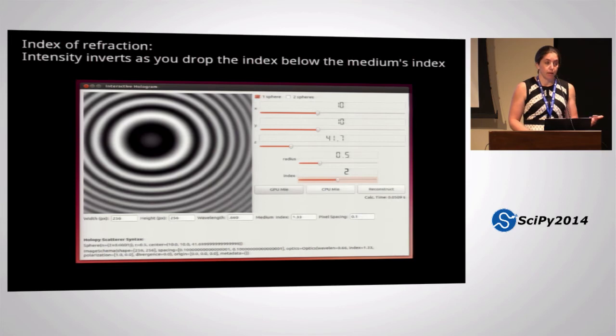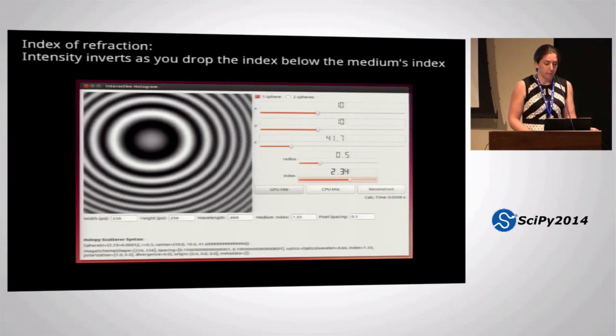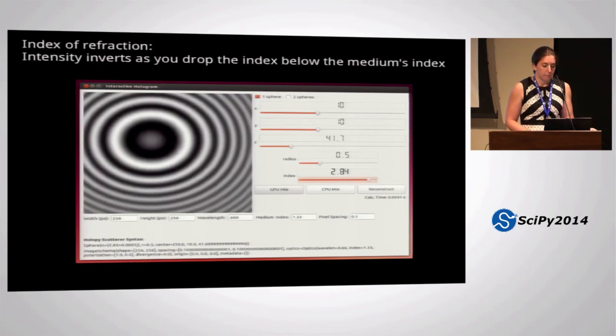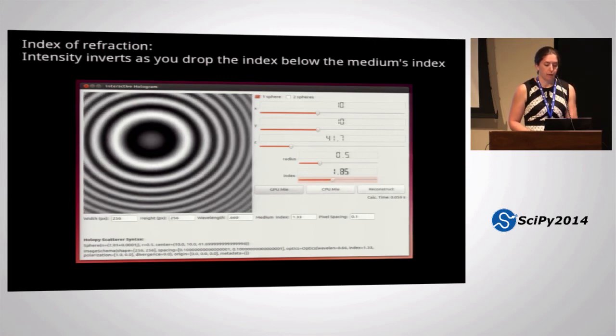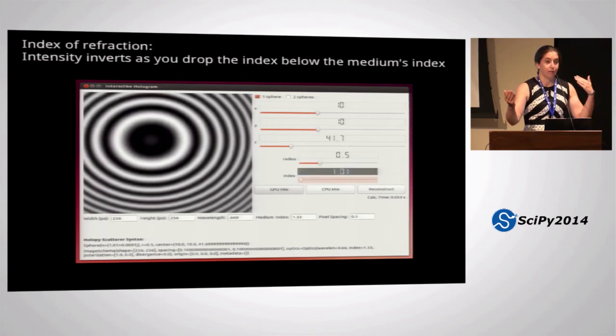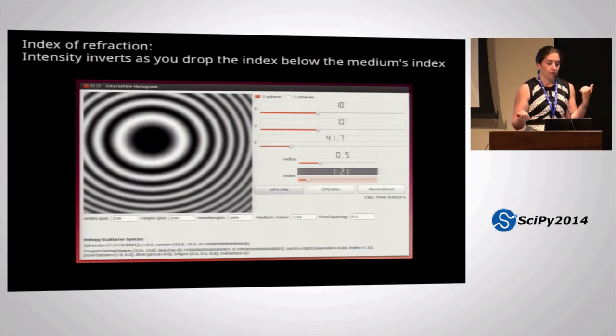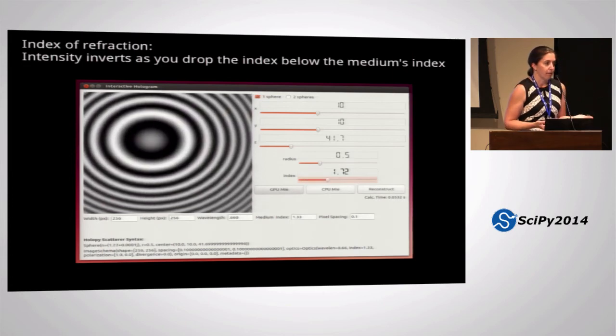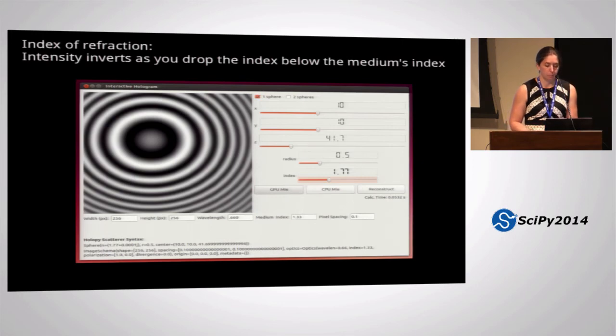Here's something that I didn't know until I played around with it in the GUI. I'm changing the index of the material here, and it's important to think about the index of the material relative to the medium that it's in. Here I have the medium set to 1.33, and as I bring the medium of the particle down through 1.33, you see that it flips. There's this switch in intensity that I didn't know to expect there, and never would have thought to investigate that with the theory. And so that kind of suggests to me some interesting experiments. Right now we work with particles that just have a fixed index all the time, but it could be fun to look at a material that's very close to the index of the background and varying.